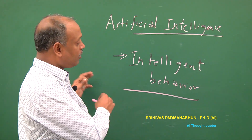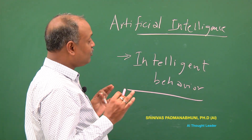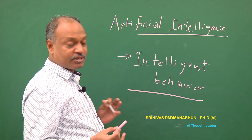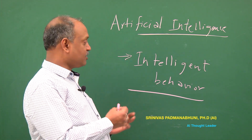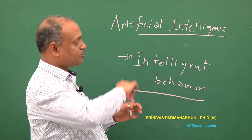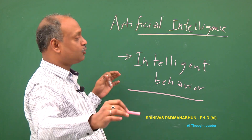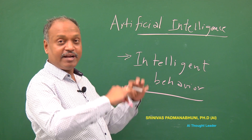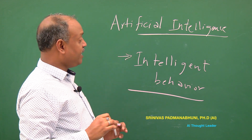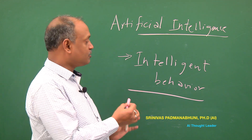Beyond these three basic elements is the aspect of being able to perform an intelligent search over a million or infinite number of possible choices. Take the example of an AI game like chess: in the first move there are many choices, and in each next move there are many more choices, leading to an exponential search space.